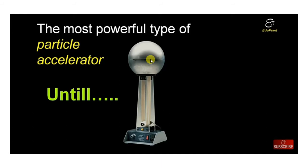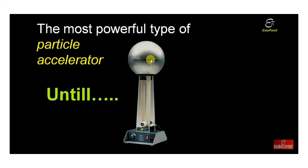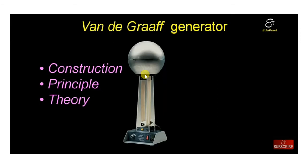At the time, the Van de Graaff generator was the most powerful type of particle accelerator. However, it did not remain the most powerful for long — after some time, it was replaced in that position by the cyclotron, which was invented and became more powerful.